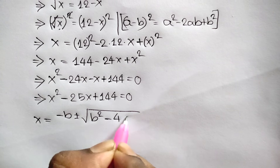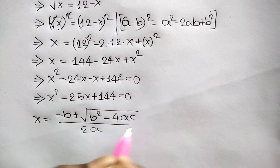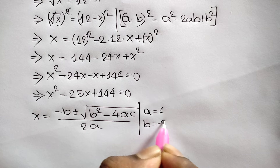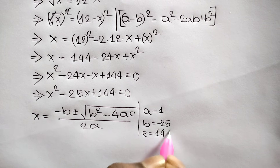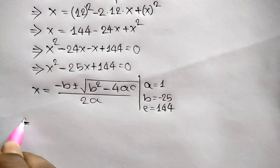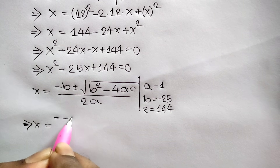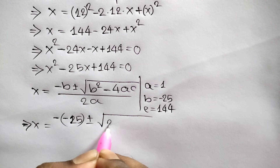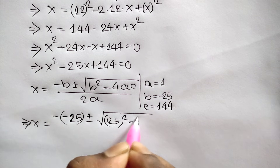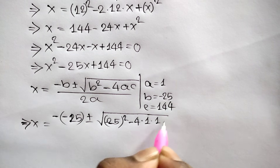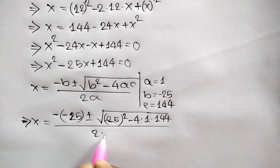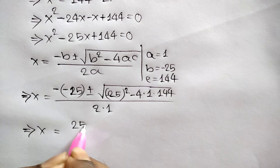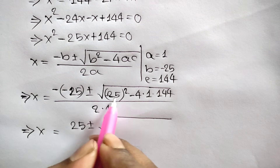We can write x is equal to negative b plus or minus square root of b squared minus 4ac over 2a. Here a is equal to 1, b is equal to negative 25, and c is equal to 144. So x is equal to negative negative 25 plus or minus square root of negative 25 squared minus 4 times 1 times 144 over 2 times 1.